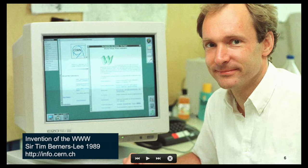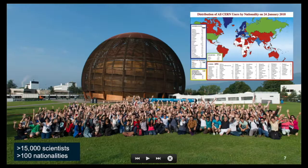Tim Berners-Lee needed some way to share information with his colleagues, so he put up a NeXT server — the first web server ever — at info.cern.ch. If you are curious, you can still go to that URL and see the first website Tim Berners-Lee created, hosted at CERN. At CERN we are a very international crowd: more than 15,000 scientists, some working on-site, some collaborating from other institutions, coming from more than 100 nationalities.